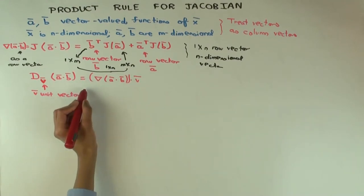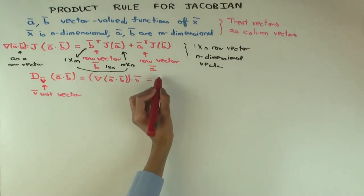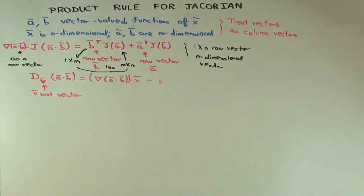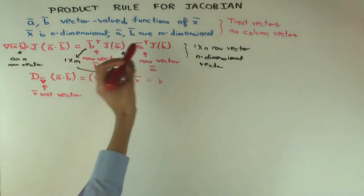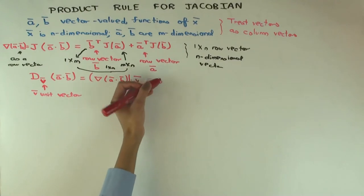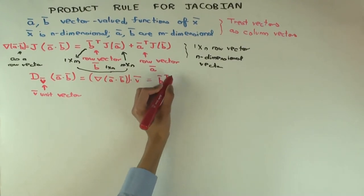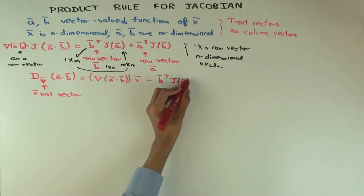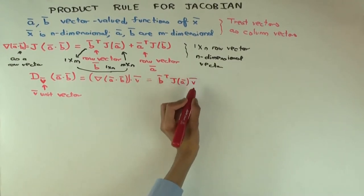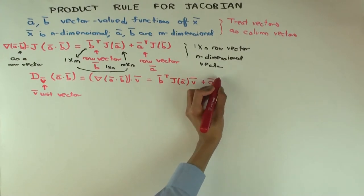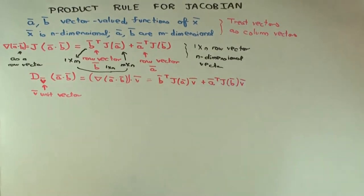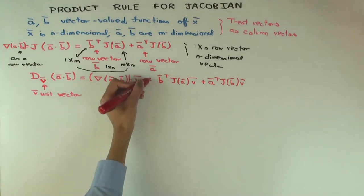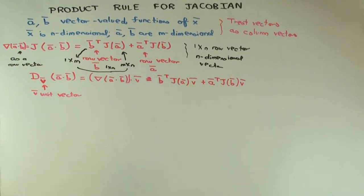So how will you rewrite this? It's just this vector times v. So what do you get? Times v, so you can distribute. b transpose J_a times v plus a transpose J_b times v.